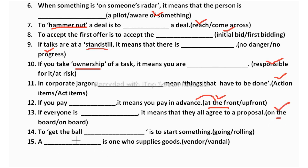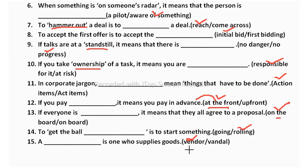To get the ball blank is to start something — going or rolling? The correct phrase is to get the ball rolling, meaning to make something begin, to start something. Next, a blank is one who supplies goods — vendor or vandal? Vandal means someone who damages and destroys things. Vendor means seller. So vendor is the correct answer.